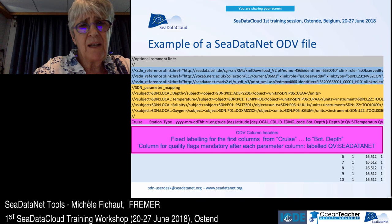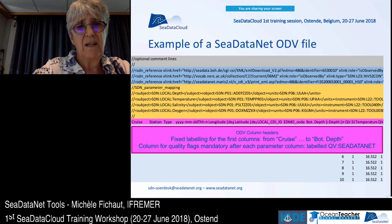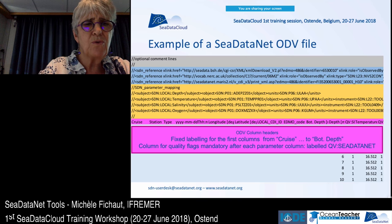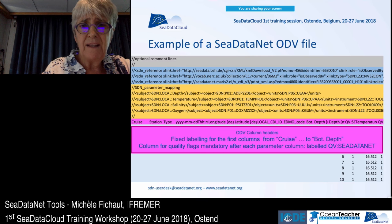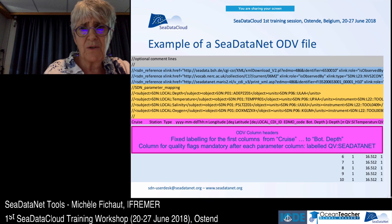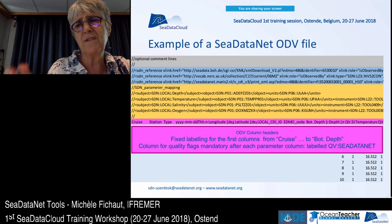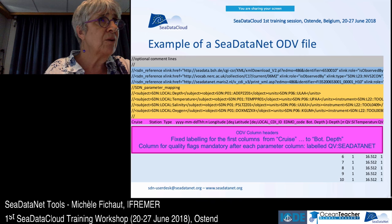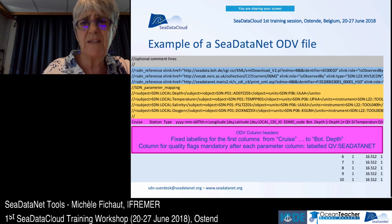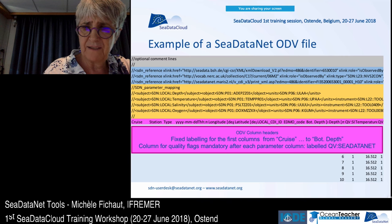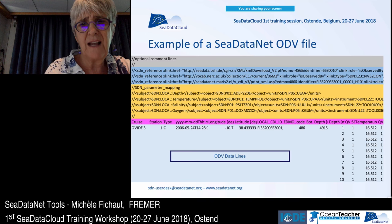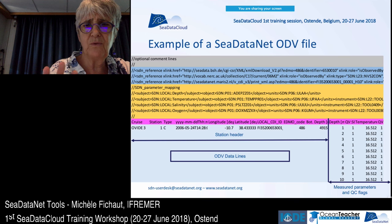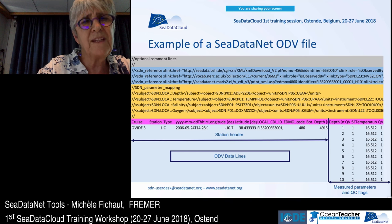We have one line for the ODV column headers. In this line, from the cruise column to the BODC data columns, the labels are fixed and cannot be changed. Each measured parameter must have a corresponding QC flags column whose name is 'QV:C-DataNet' — this is mandatory.